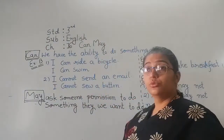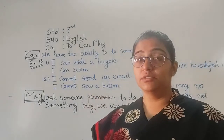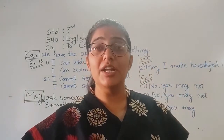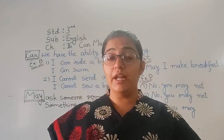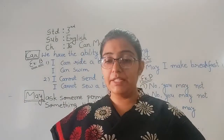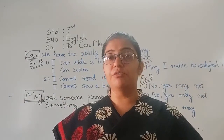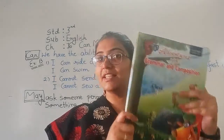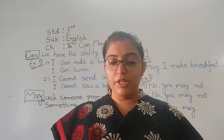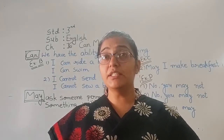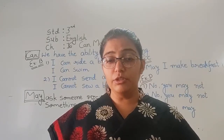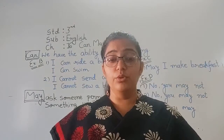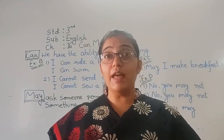Here you can see 2 new words given: Can or May. This is our third standard first word topic. On page number 61 in our grammar book, here you can see that one picture is given. There are 3 clouds. In the first cloud: 'Woo woo, look at me, I can fly.'